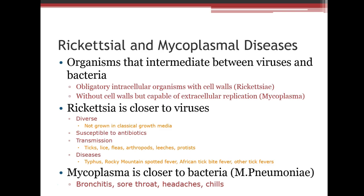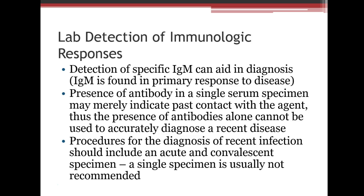When lab-testing these diseases, we use IgM or IgG testing. Detecting specific IgM indicates a primary response — the patient is actively ill. The presence of antibody in a single serum specimen may indicate past contact with the agent, so antibodies alone cannot accurately diagnose a current disease. To diagnose a recent infection, you need both an acute and a convalescent specimen. If they only have IgM, they were recently exposed; if they have both IgM and IgG, it may be a re-exposure.